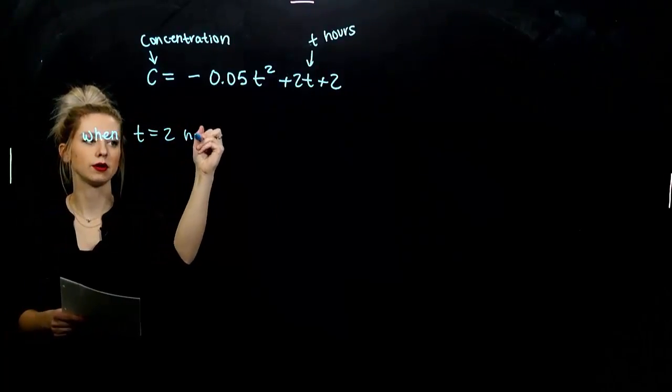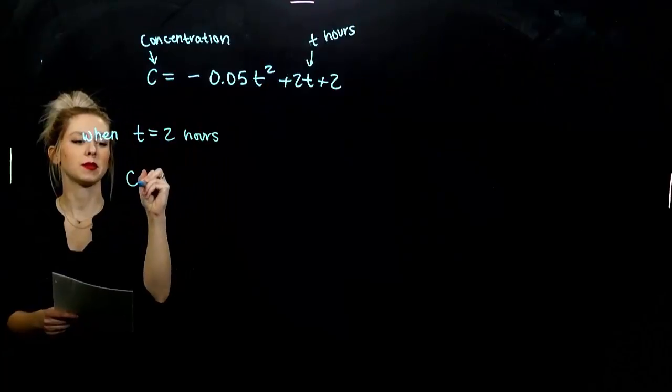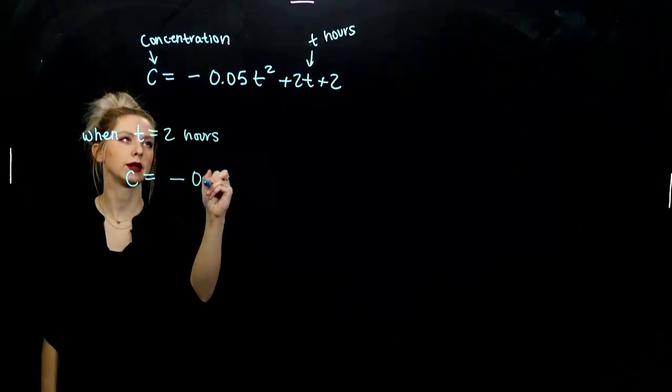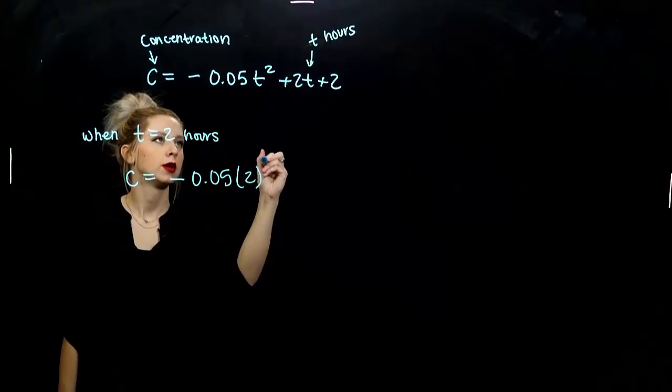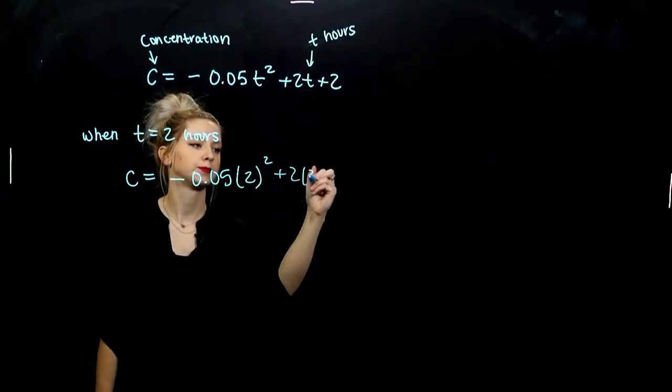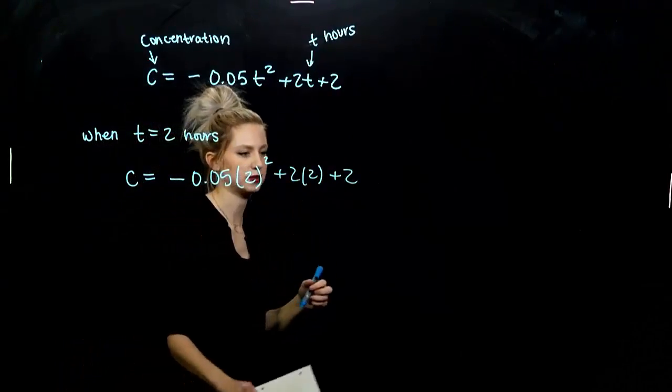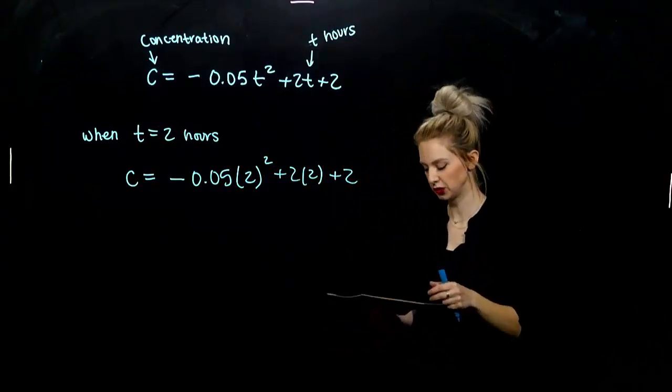So when T is equal to two hours, what does that mean for my concentration? You can plug it in and evaluate. Again, wherever I see T, my variable, put parentheses around it so we don't make any mistakes.